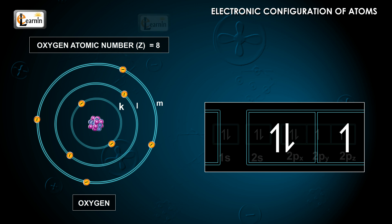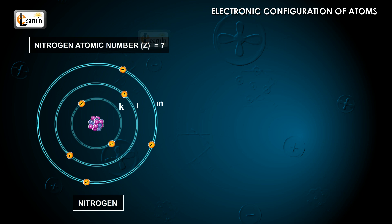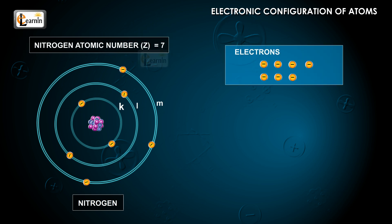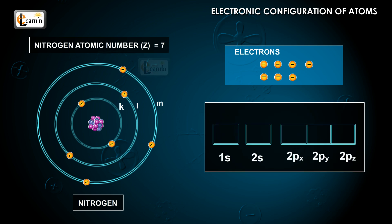Let's consider the nitrogen atom. It has seven electrons. The first six electrons have the same arrangement as that of carbon, which is 1s2, 2s2, 2px1, 2py1. The seventh electron will enter only in 2pz, but cannot enter into 2px or 2py.